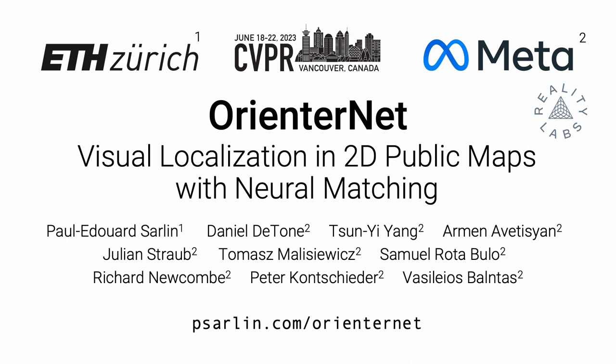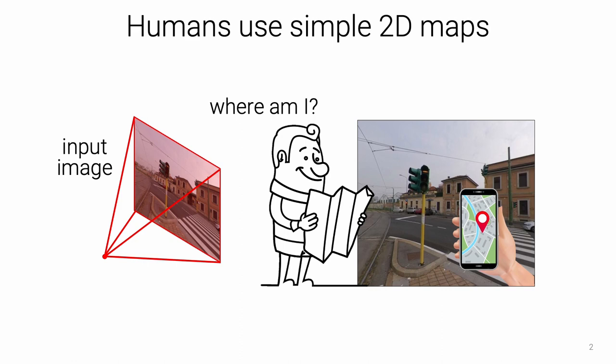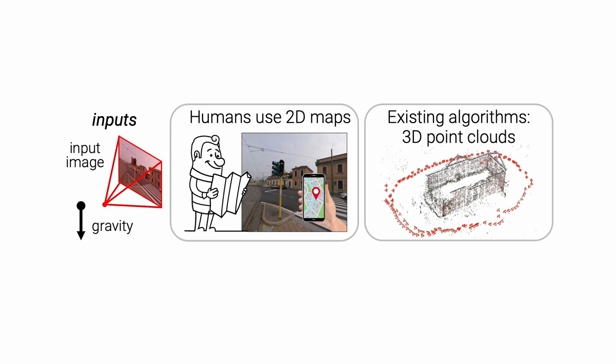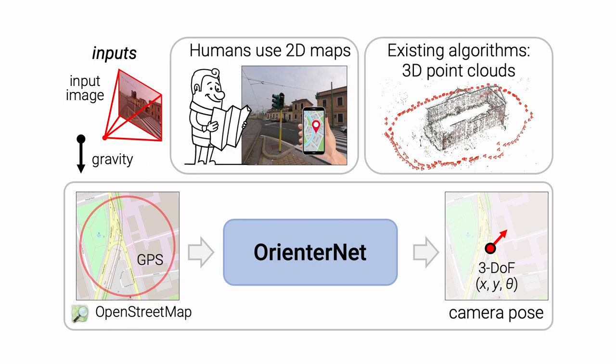We present OrientInternet for visual localization in 2D public maps. Humans can orient themselves in their 3D environments using simple 2D maps. Differently, algorithms for visual localization mostly rely on complex 3D point clouds that are expensive to build, store, and maintain over time. We bridge this gap by introducing OrientInternet, the first deep neural network that can localize an image with submeter accuracy using the same 2D semantic maps that humans use. OrientInternet leverages open and globally available maps from OpenStreetMap, enabling anyone to localize anywhere such maps are available.